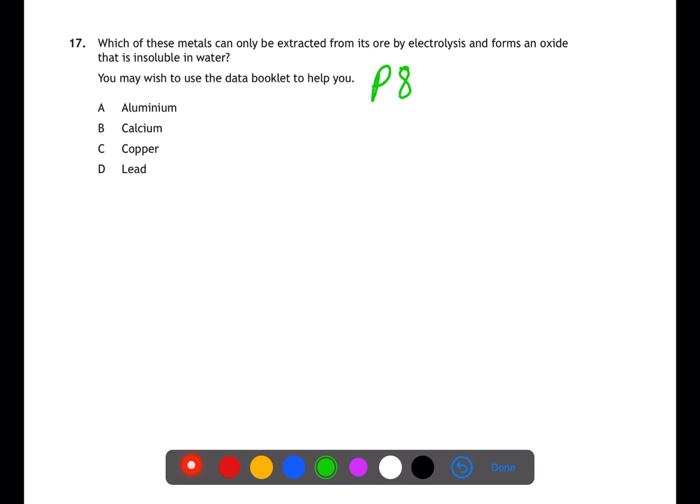For question 17, use page eight of the data book which gives you the solubilities. Aluminium oxide is insoluble. Calcium oxide is soluble. Copper oxide is insoluble, as is lead oxide. Therefore, we can eliminate calcium as one of the options since we need an insoluble substance. For extraction by electrolysis, only the most reactive metals are extracted by electrolysis. Use page 10 of the data book to find the most reactive metal. Here it would be aluminium.